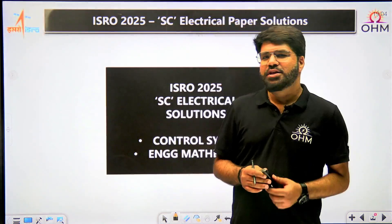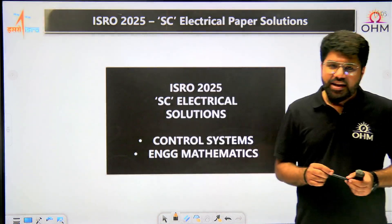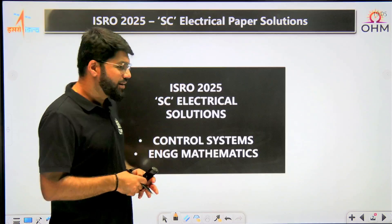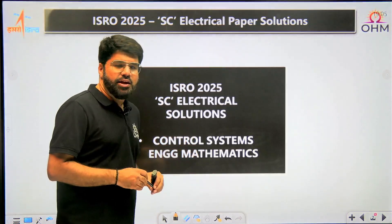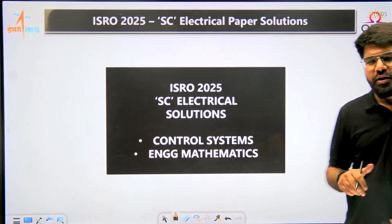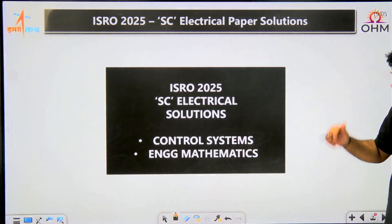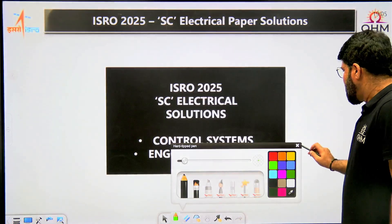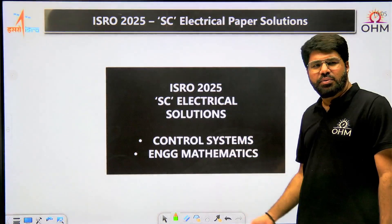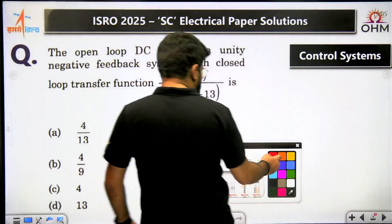Hi students, welcome once again to Ohm Institute YouTube channel. In this video we are going to discuss the ISRO 2025 SC electrical paper solutions. We have already had discussions of other subjects like electrical machines, power systems, etc. In this video I am going to cover control systems and engineering mathematics. There are no questions on signals and systems in the electrical paper of ISRO, but control systems and maths are there. Let us see — around five or six control questions are there, and maths as always has less weightage in ISRO.